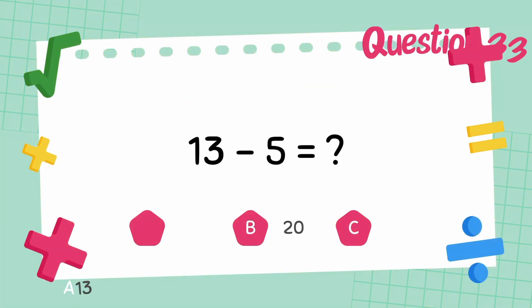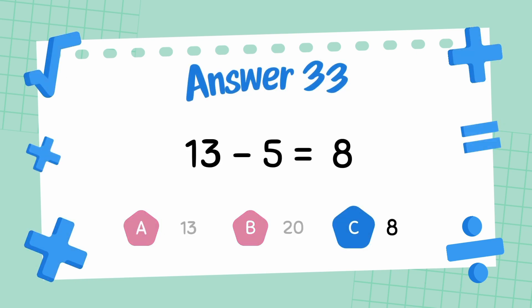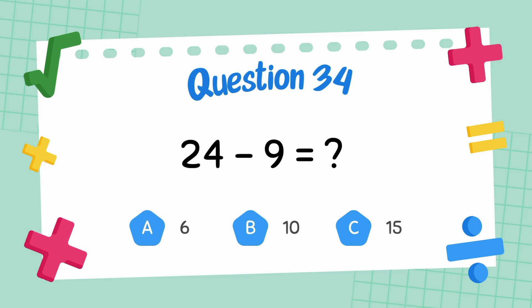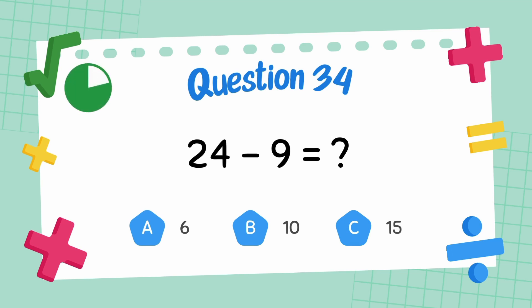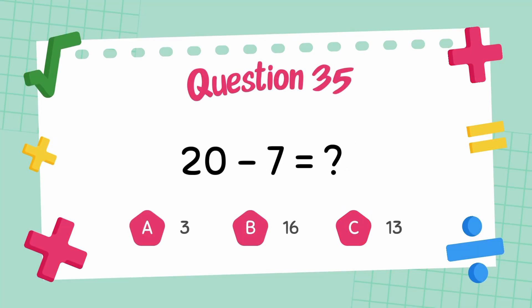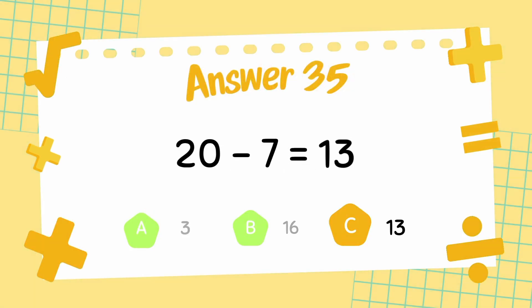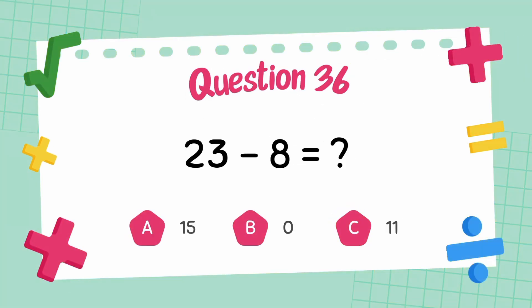What is 13 minus 5? The answer is 8. What is 24 minus 9? The answer is 15. What is 20 minus 7? The answer is 13. What is 23 minus 8? The answer is 15.